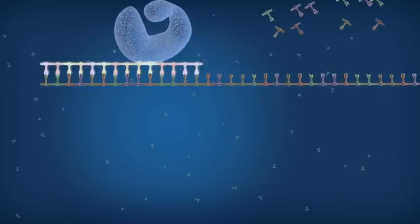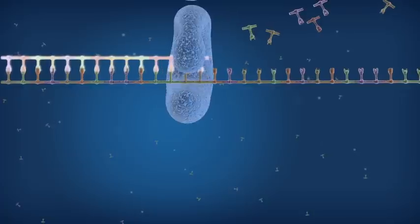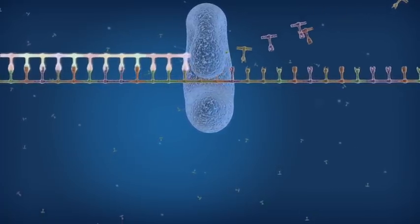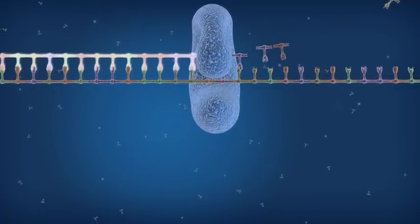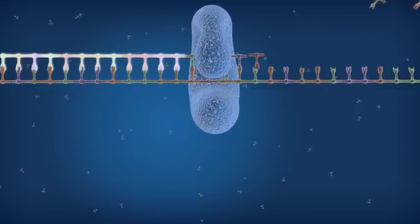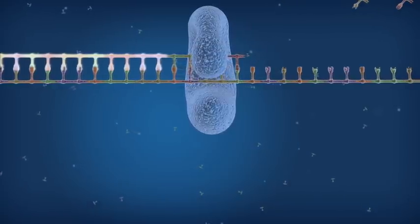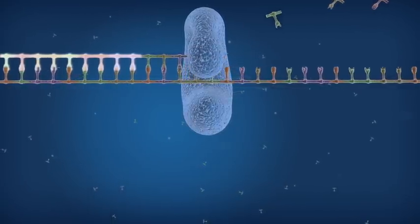One major factor for enzyme performance is processivity, the speed at which bases are added during PCR. Higher processivity results in a greater number of nucleotides incorporated per binding of the DNA polymerase to the template.